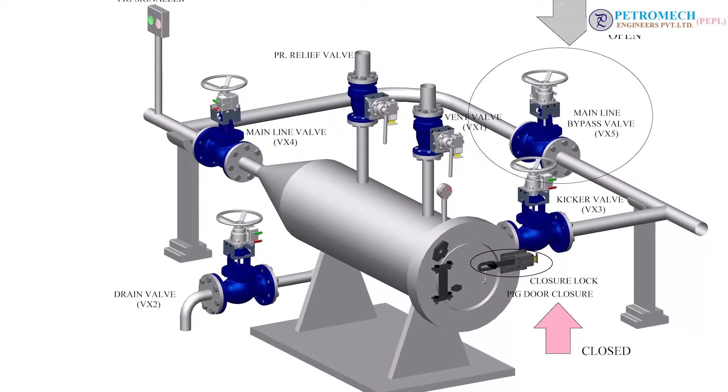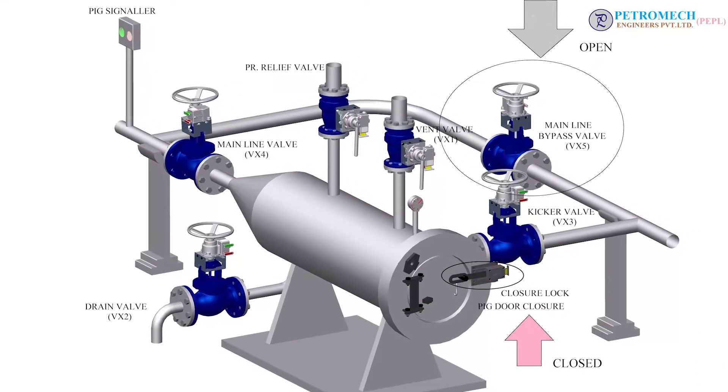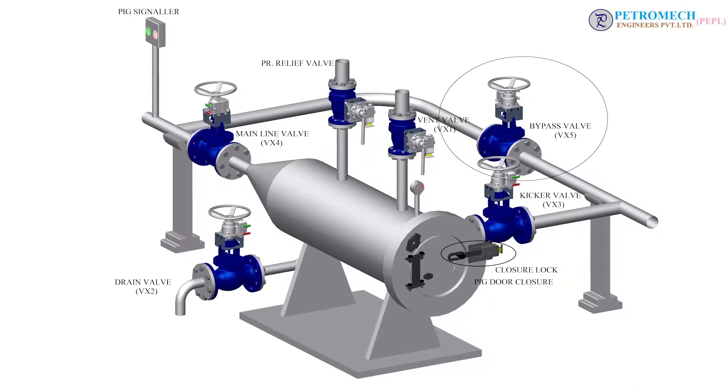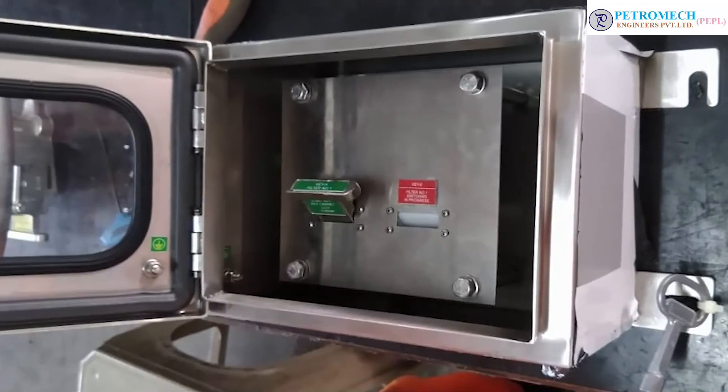Operation startup position. Initially, all valves are in closed position except mainline bypass valve. Quick opening closure is in locked closed position. Key A is located in the control room key cabinet.